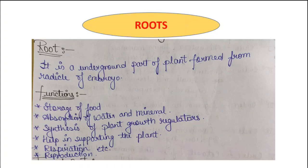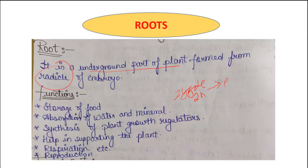Let us first start with the root. Root is basically the underground part of a plant which is formed from the radicle. As you know, a seed is formed from the fertilization of pollen grains and the egg. When these two gametes of a plant fertilize, they form a zygote — that is, a diploid cell. When this zygote further develops, it forms a structure known as embryo.